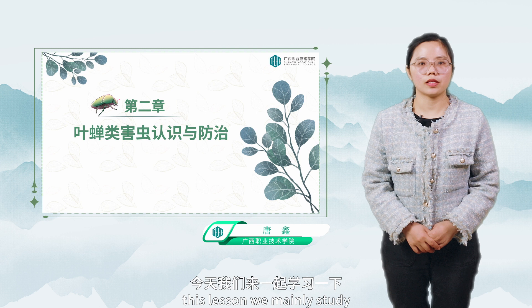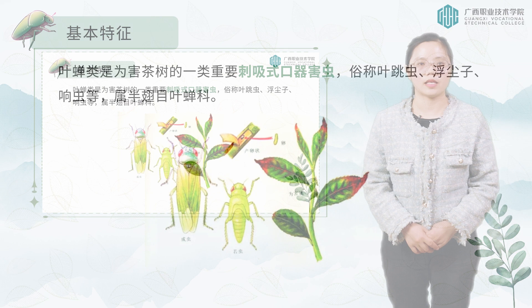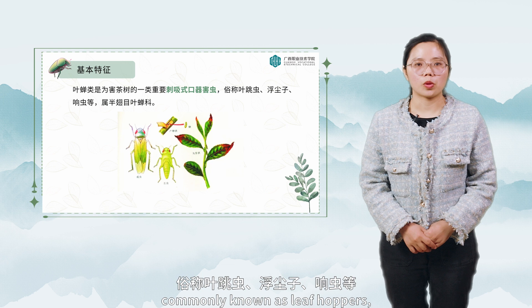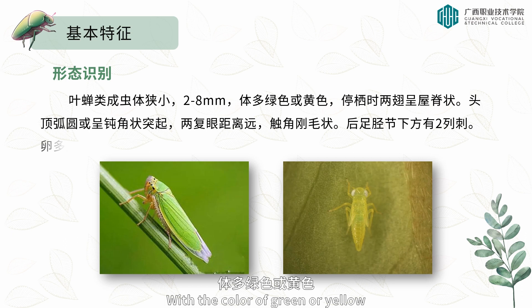Hello everyone. In this lesson we mainly study the understanding and prevention of leafhopper pests. Leafhopper is one of the important pests damaging tea trees, with piercing-sucking mouthparts, commonly known as leafhoppers, floating dust, ringworm, etc. They belong to Hemiptera Cicadellidae.